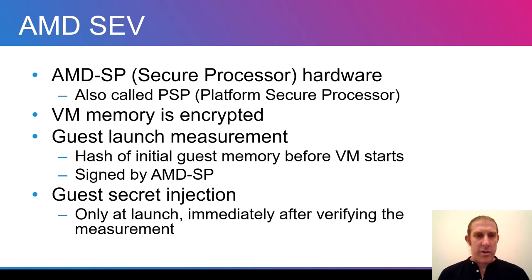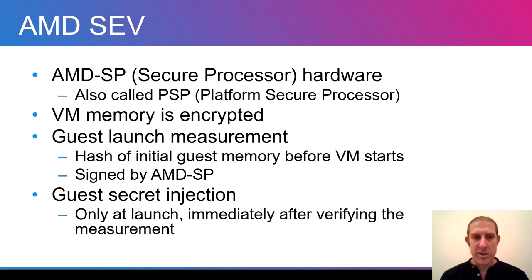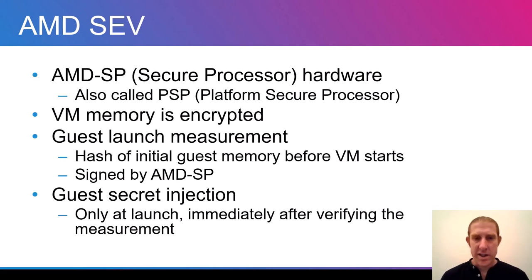If we talk about the hardware solution in AMD SEV, this is a feature of modern AMD processors which include a secure processor, also called PSP. This secure processor handles all the sensitive operations like storing the keys and so on. The VM memory is encrypted on the fly, and the host cannot read the VM memory. Another feature relevant to our story today is the guest launch measurement — this is the hash of the initial guest memory before the VM starts running its first instruction. This hash is signed together with some other information about the VM by the secure processor, so it cannot be forged.